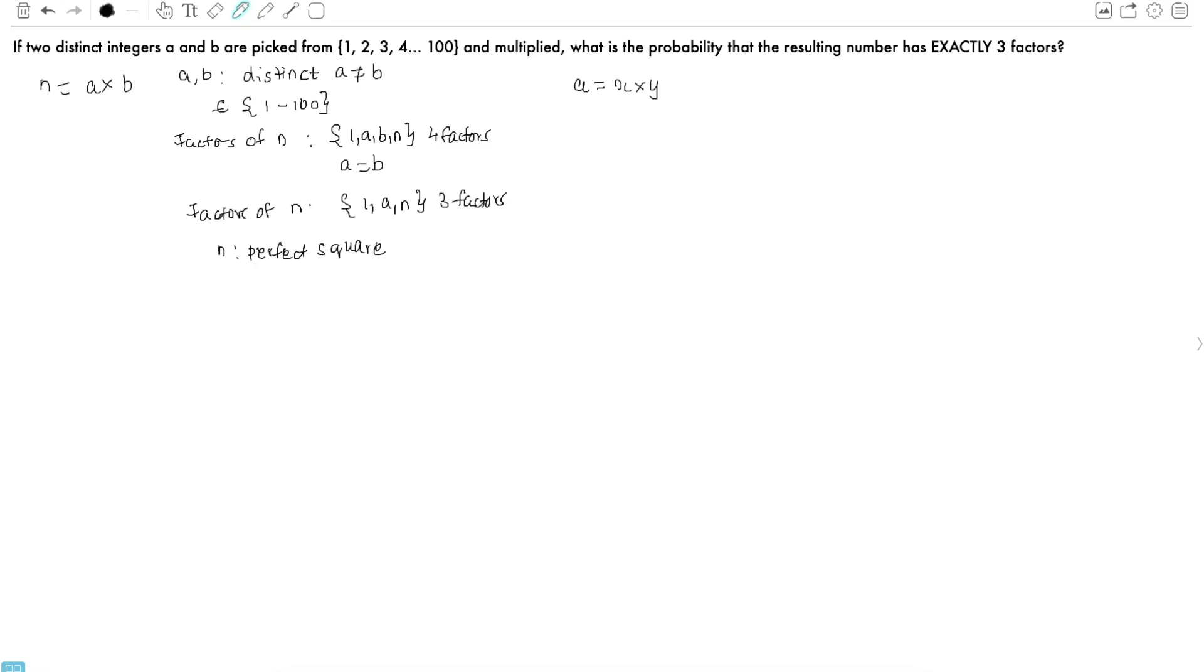Therefore, the factors of n now become 1, x, y, a, and n, or a total of five factors. We are obliged to consider n as a number with exactly three factors. Therefore, a cannot be a composite number. Or in other words, a should be a prime number.